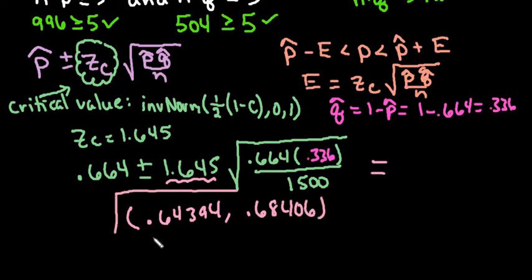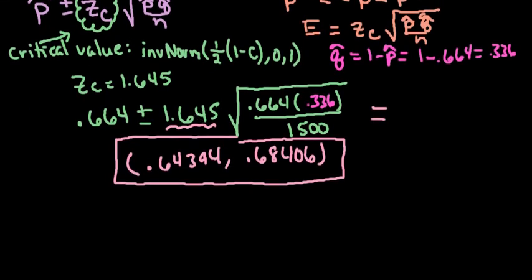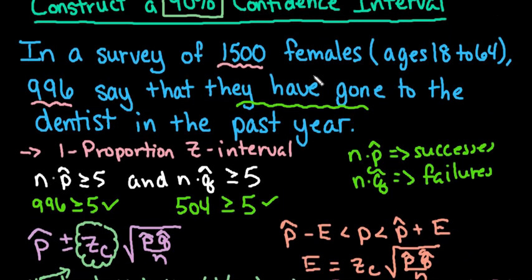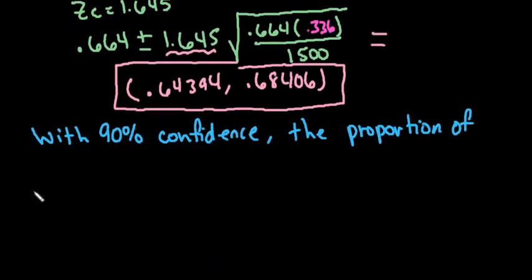It's always important to interpret your results in the context of the original problem. So we could say with 90 percent confidence, the proportion of... This is how you would always start with any one proportions interval, you're going to say with whatever level of confidence and then you're going to say the proportion of, and then you're going to go back to your problem and look at what is the context. So we're talking about females ages 18 to 64. So the proportion of females.